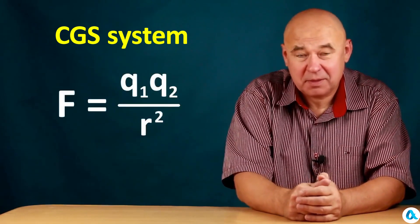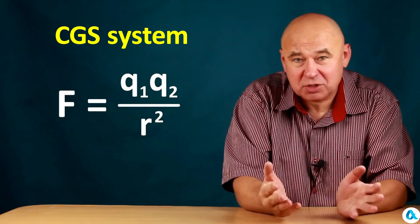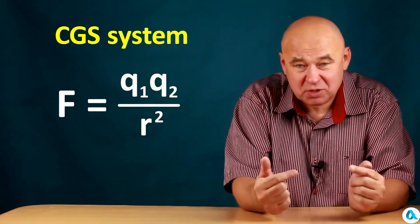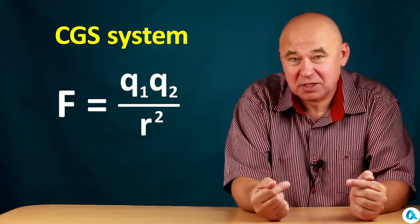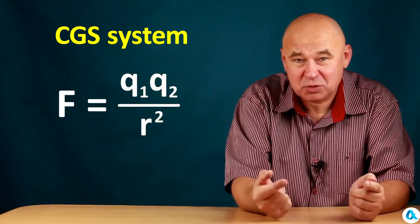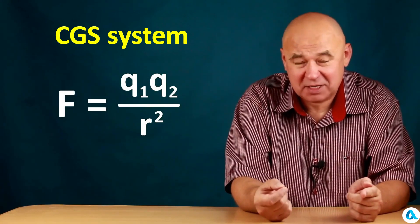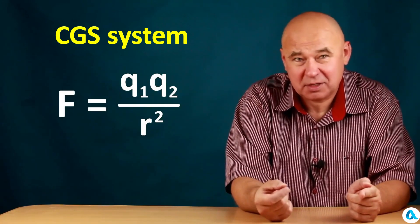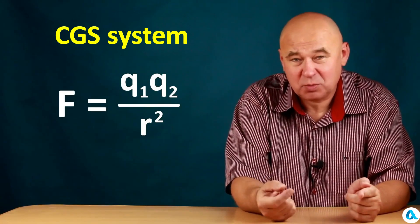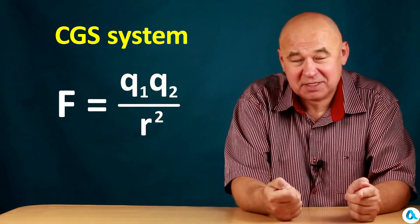And now, using Coulomb's law, we can introduce the unit of charge. In the Gaussian CGS system, this is done very simply. Coulomb's law is directly written in this form and it is declared that a unit charge is such that two unit charges, being at a unit distance, interact with a unit force. Well, in the CGS system, the distance is taken as a centimeter and the force as a dyne. And accordingly, charges are those which, being at a distance of one centimeter, interact with a force of one dyne.